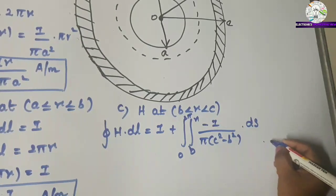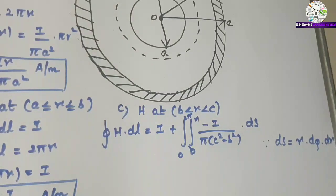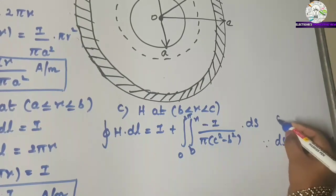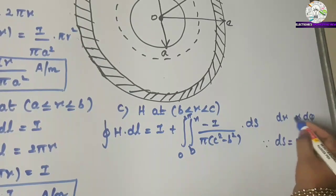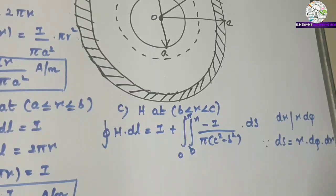The differential surface element dS equals R dφ times dR, because for the coaxial cable the differential elements are dR and r dφ. The Z component is not considered, since we only account for the radius and phase angle of the conductor.